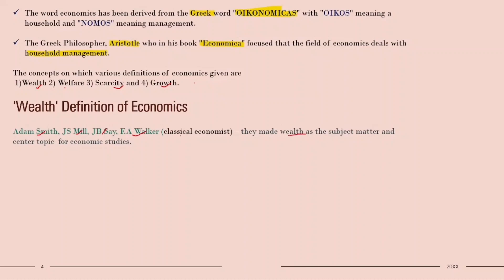The classical economists were active in the late 18th century to mid-19th century. They produced the theory of market economics and focused on economic growth and freedom — like laissez-faire. Adam Smith, J.S. Mill, and Ricardo were famous classical economists.